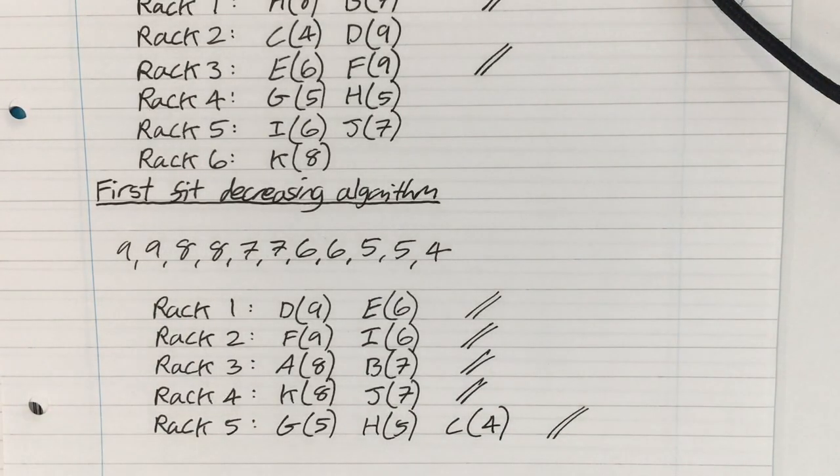And that is an optimal solution in this case. Okay, because there's no way you're going to be able to fit all of those boxes in less than 5 racks. So therefore, if you can fit them in 5 racks, then that's optimal. We have fit them in 5 racks. Therefore, that is the optimal solution.